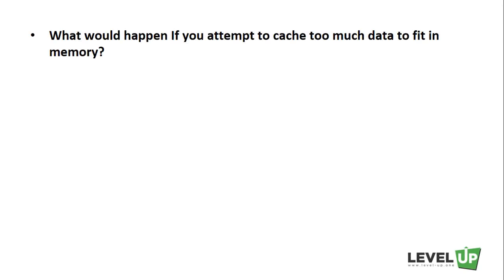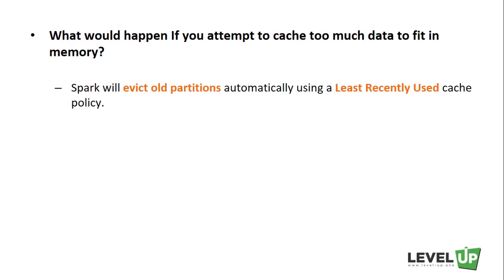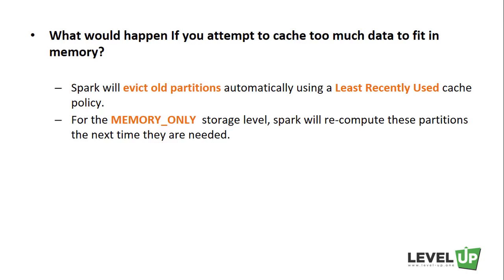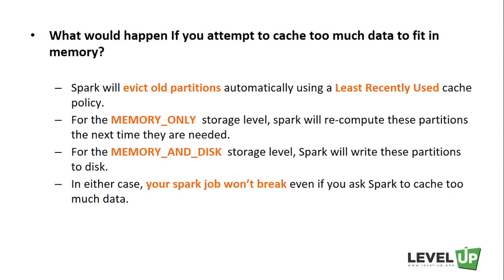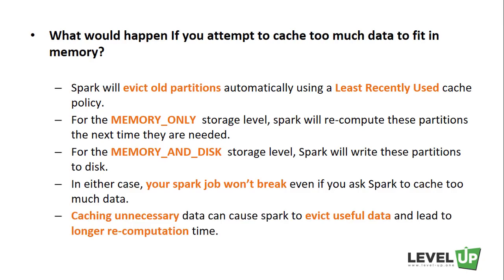What happens if you attempt to cache too much data to fit in memory? Spark will evict old partitions automatically using a least recently used cache policy. For the memory-only storage level, Spark will recompute those partitions the next time they are needed. For the memory-and-disk storage level, Spark will write those partitions to disk. In either case, your Spark job won't break even if you cache too much data — but caching unnecessary data can cause Spark to evict useful data and lead to longer recomputation times. You should call the unpersist method on an RDD when you want to remove it from the cache.